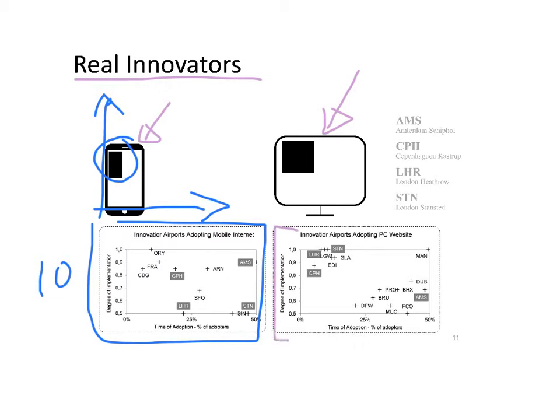In this second case, they were represented here, and there were 15 airports. So the airports which appeared in both innovation processes are considered real innovators, and four airports were identified.